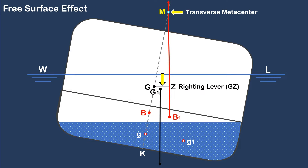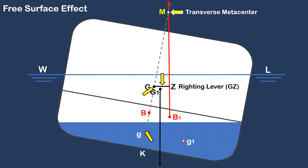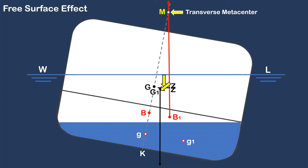This is supposed to be the righting lever if the water inside the tank does not move, or if the water is in solid form or frozen. But since the water inside the slack tank is free to move, due to its movement, the ship's center of gravity, capital G, moves in a parallel direction with the center of gravity of water inside the tank. Thus, the present righting lever of the ship at this moment is from G1 to Z1.